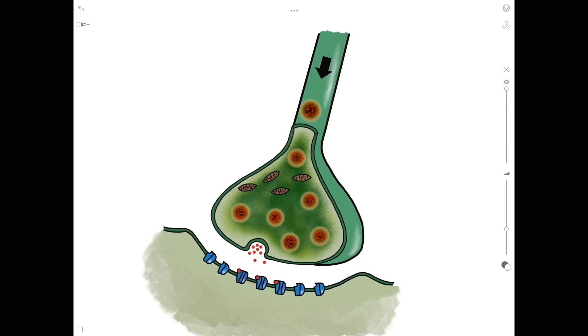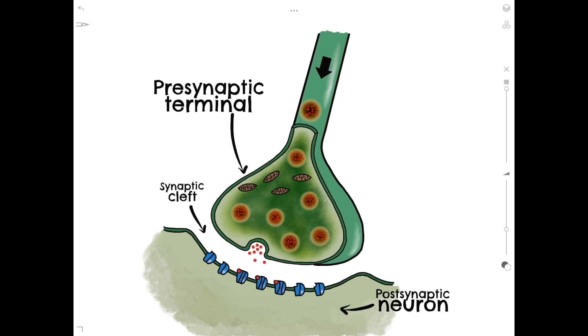The neuron from which the signal is coming is called the presynaptic cell. The axon of the neuron in this image is labeled as the presynaptic terminal. The cell receiving the signal is the postsynaptic neuron. The space between the presynaptic and postsynaptic cells is referred to as the synaptic cleft.